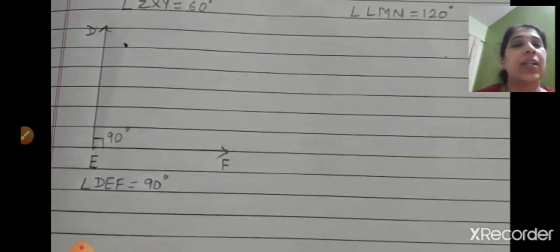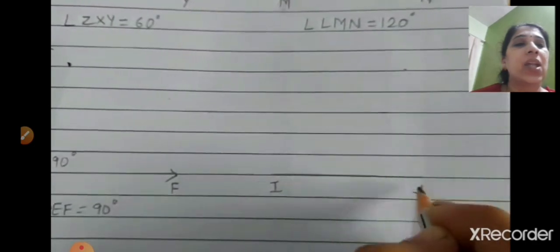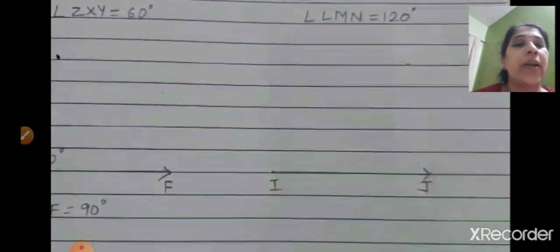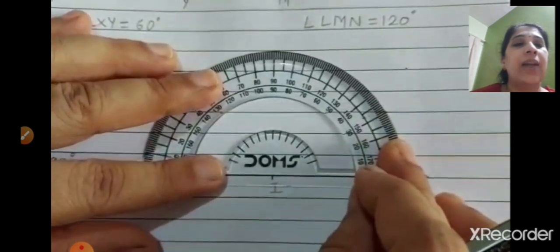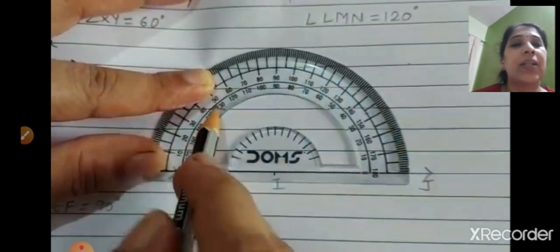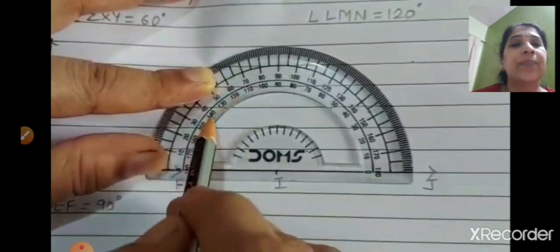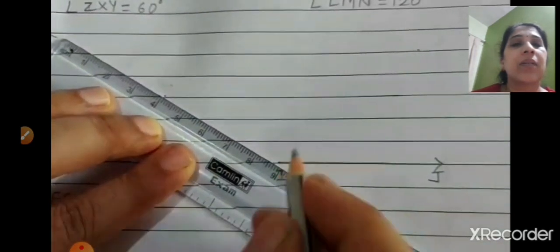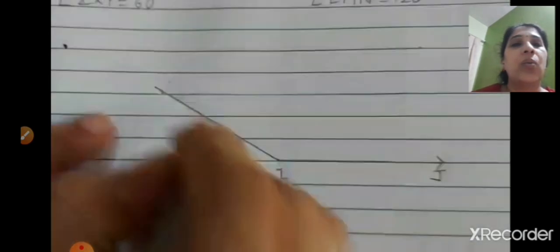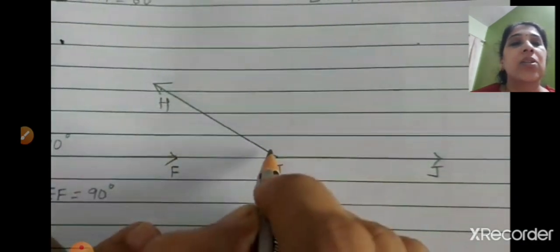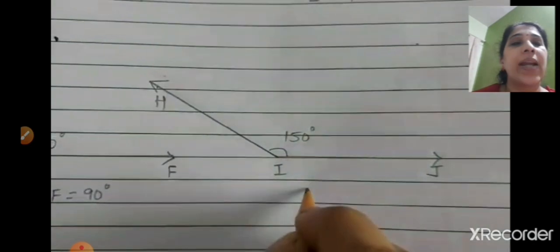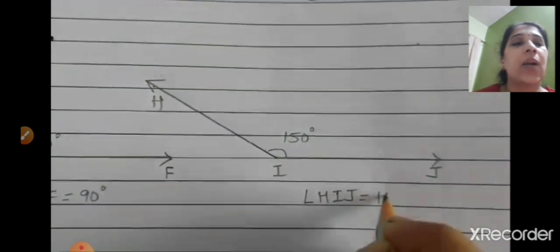Next is 150 degrees. Draw a straight line and mark the two points as I and J. Keep the center of the protractor on point I. From the left, count 180, 170, 160, 150 — mark a point at 150. Join both lines, label the third letter H, and write 150 degrees near I. So angle HIJ = 150 degrees.